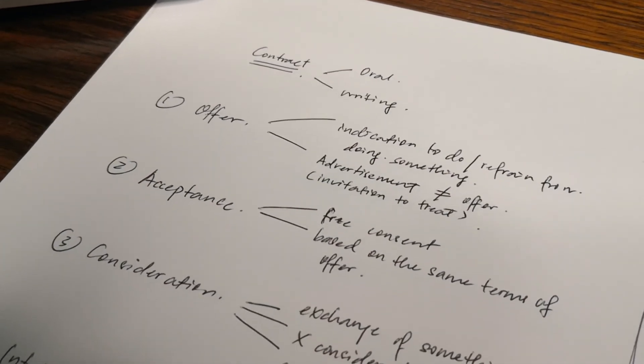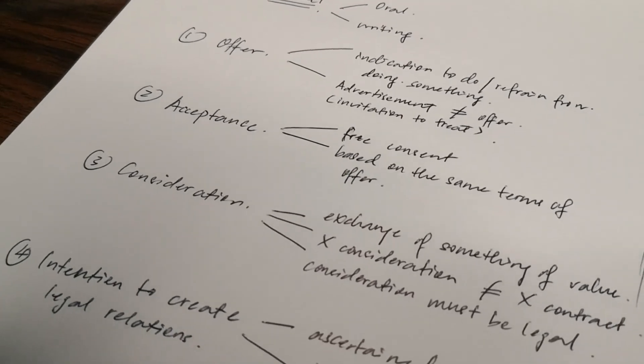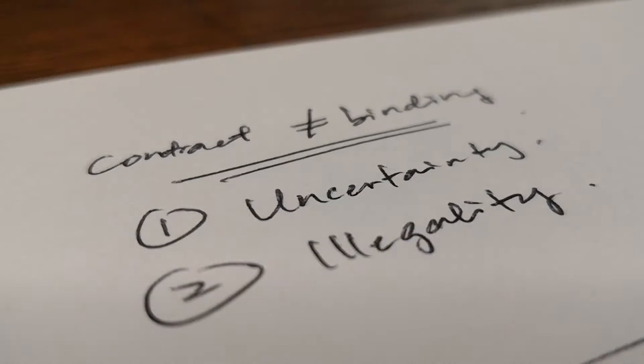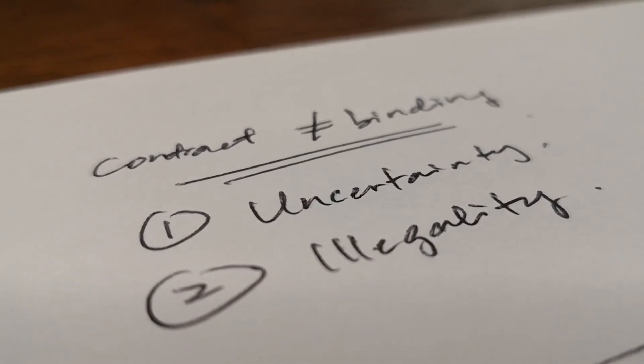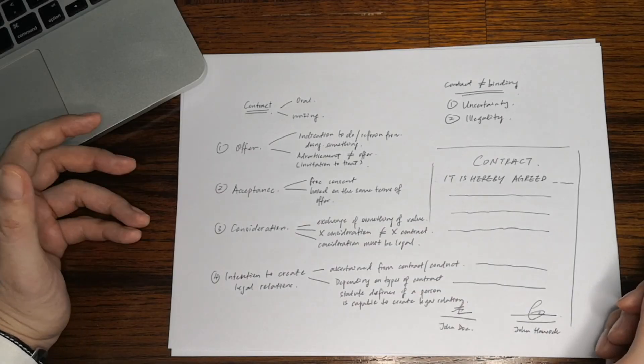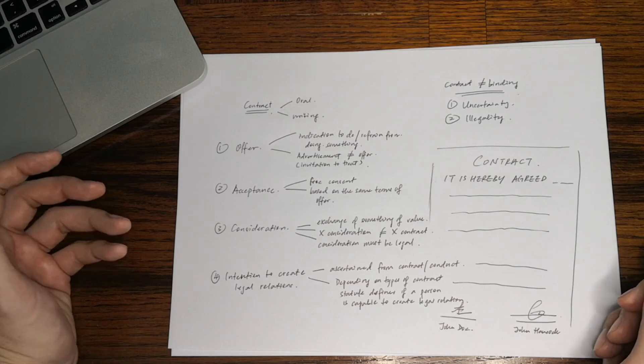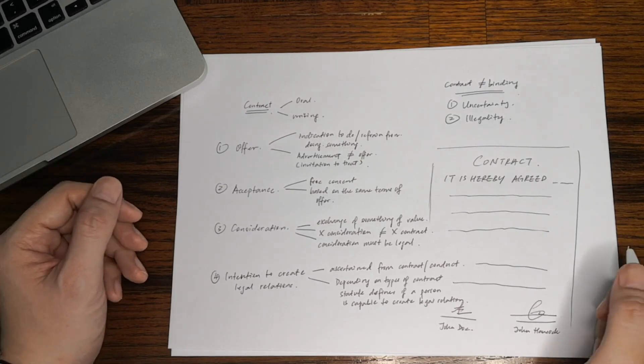So to recap, a contract would have an offer, acceptance, consideration, and an intention to create legal relations. The object must not be unlawful and the subject of the contract must be certain. Before you hold someone accountable for an agreement or promise he's made, use this as a checklist to determine if there is a valid contract.